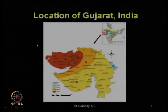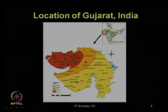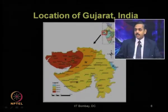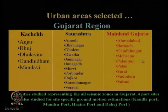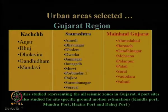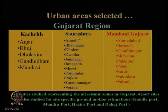This is the map showing the location of Gujarat. Gujarat is the westernmost state of India, surrounded by the Arabian Sea and the neighboring country Pakistan. The urban areas of Gujarat region have been subdivided into three major regions: Kach region, Saurashtra region, and mainland Gujarat region.